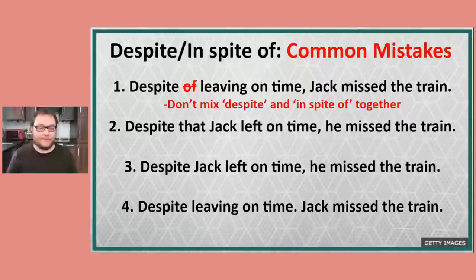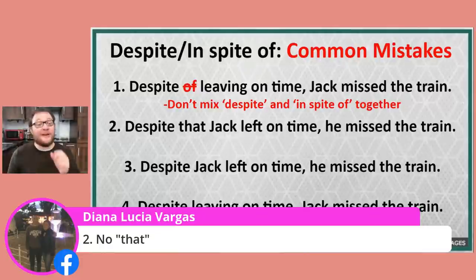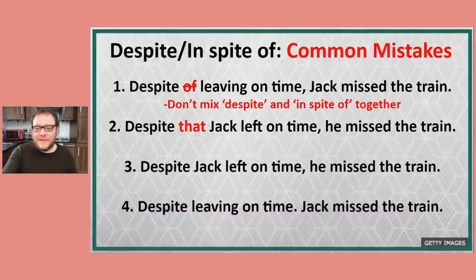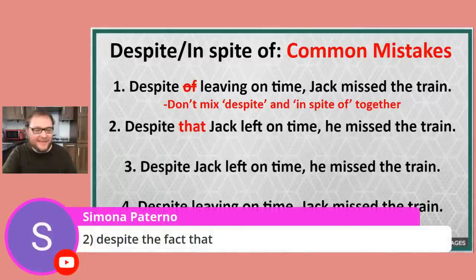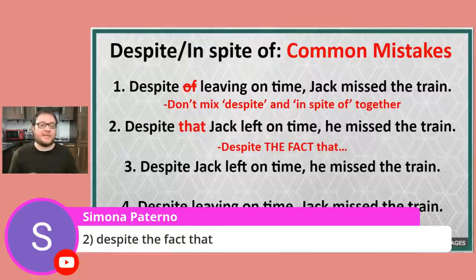How about sentence number two? Diana says the problem is that — you're almost correct, Diana. You've identified the problem, but it's not that we don't use that. It's that some other words are missing. Simona says despite the fact that — well done! This is another very common mistake. People say despite that and then a verb phrase, but we need to use the full expression: despite the fact that.